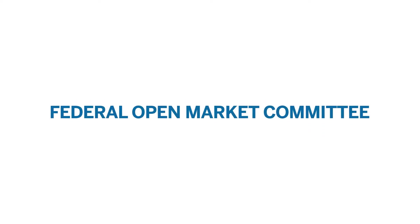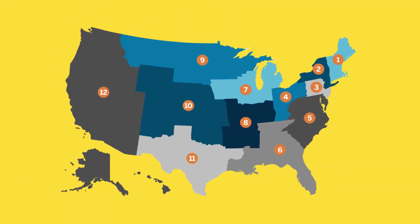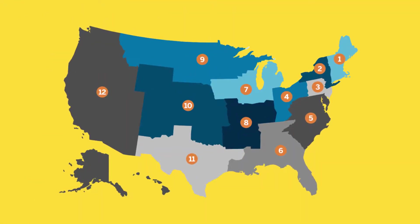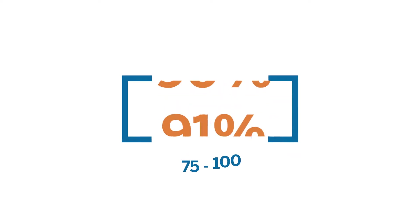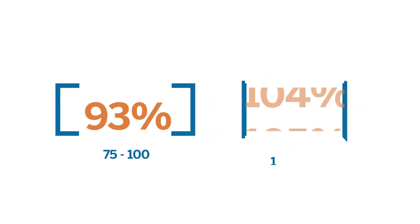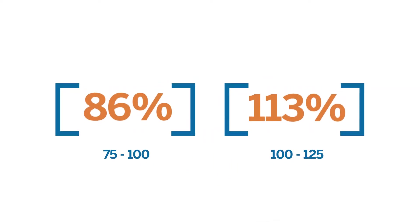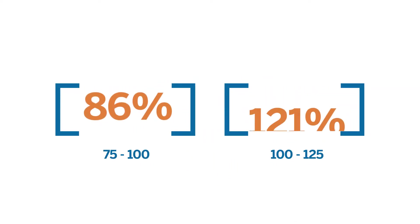The Federal Open Market Committee, or FOMC, is responsible for guiding monetary policy for the United States Federal Reserve System. This committee meets eight times a year to establish a target rate or target range for the federal funds rate.